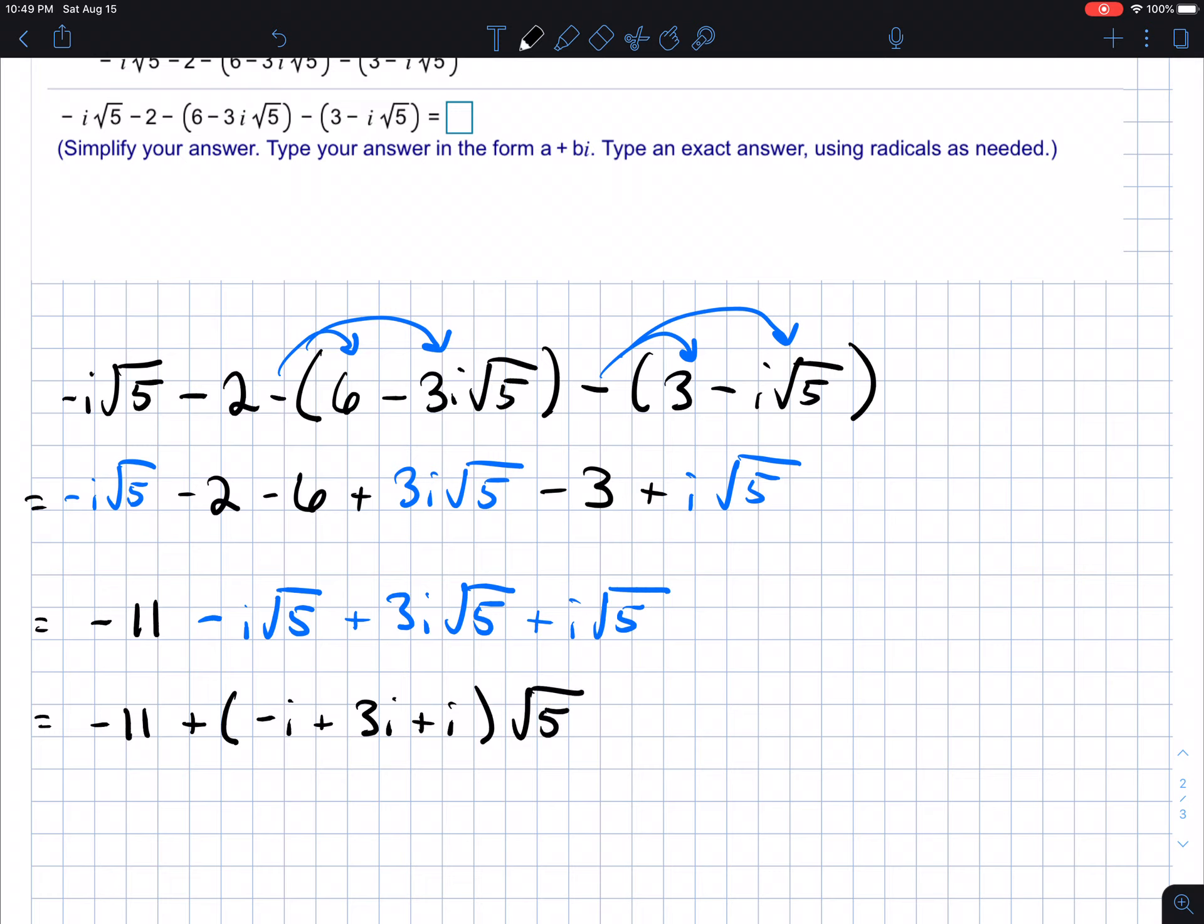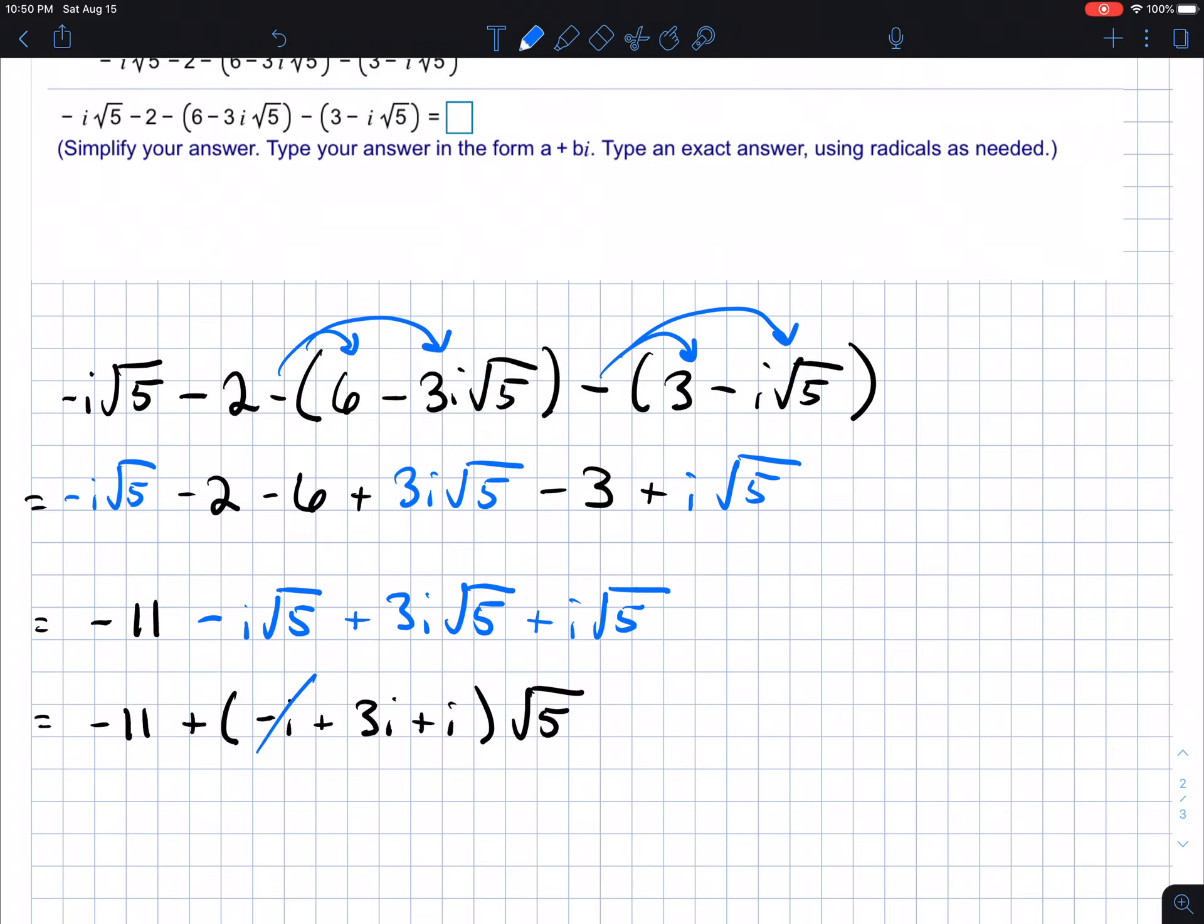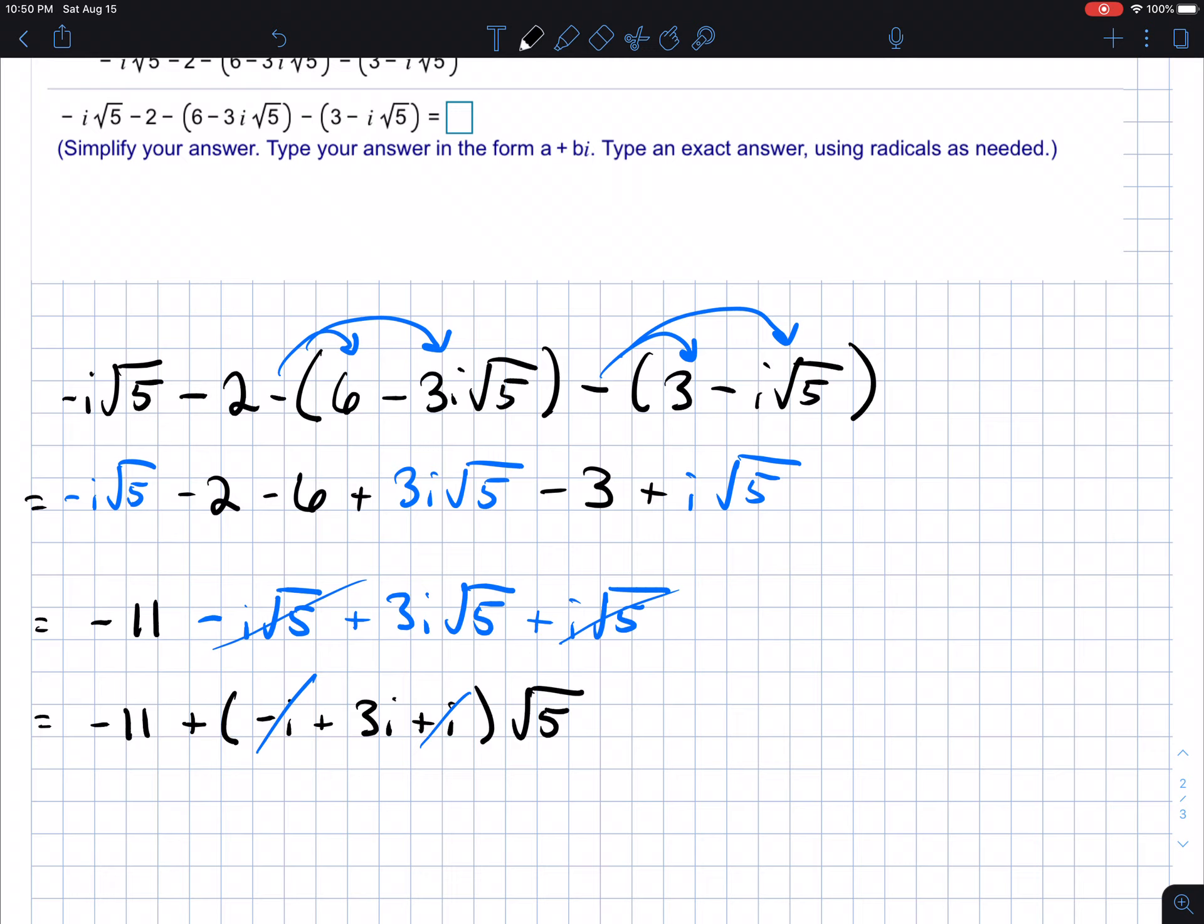So now it should be clear as far as how to combine these. You have a negative I plus three I plus I. So negative, negative one plus three is two plus one. Oh, I guess those two cancel, right? So like this should cancel that. And you can see the same thing here. That would be canceled by that, right? So it would just be the three I root five. I didn't see it until I spaced it out, but that's okay.